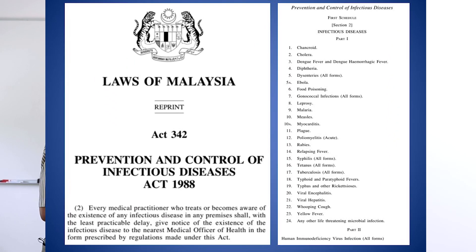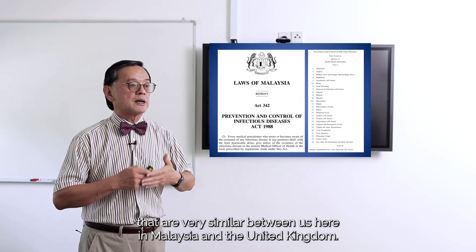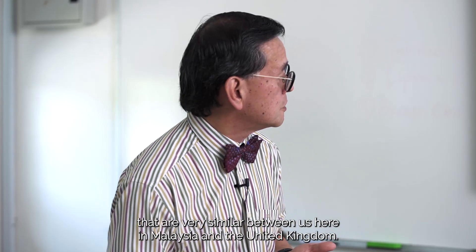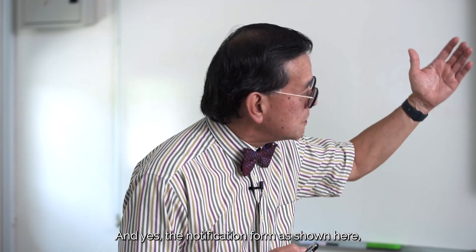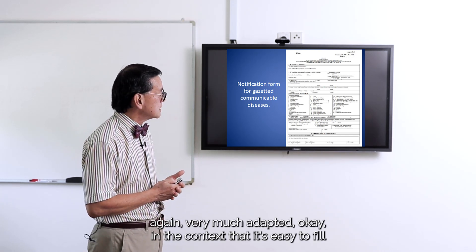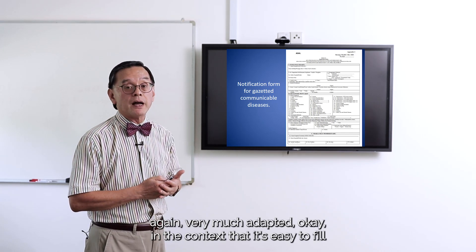We are fortunate that Malaysia's healthcare laws are very broadly similar to those of the United Kingdom, so what is compulsorily notifiable is very much aligned. Examples include cholera, dengue fever, diphtheria, Ebola, measles, malaria, and leprosy, just to name a few that are common between Malaysia and the United Kingdom. The notification form shown here is largely a tick-box format, and the notifying doctor must fill it in as diligently as possible.